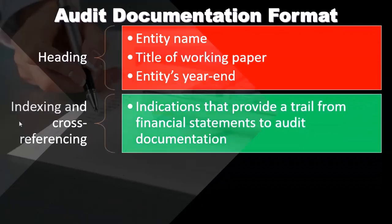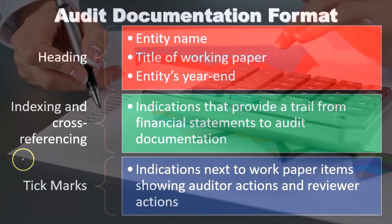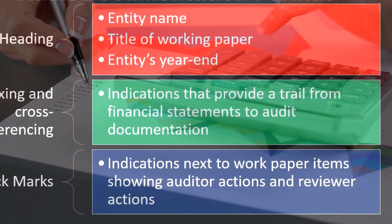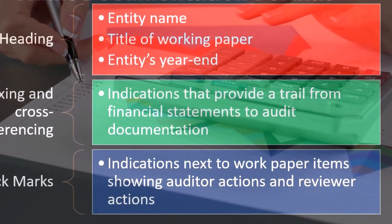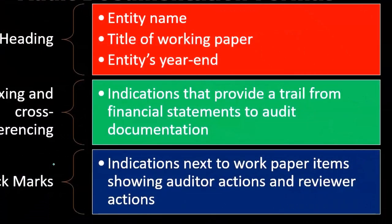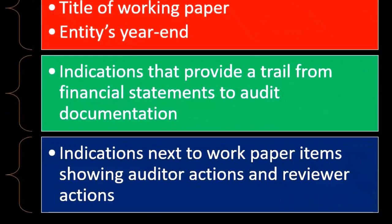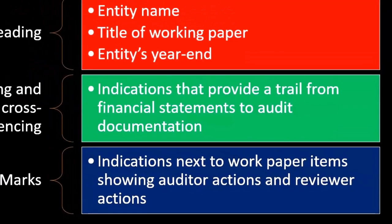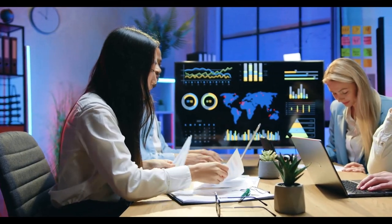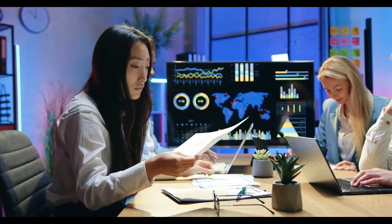Tick marks are indications next to work paper items showing auditor actions and reviewer actions. This will become more apparent when we actually put together working papers for particular assertions and account balances. Note that different types of organizations may use different methods for their tick marks and for their indexing and cross-referencing.